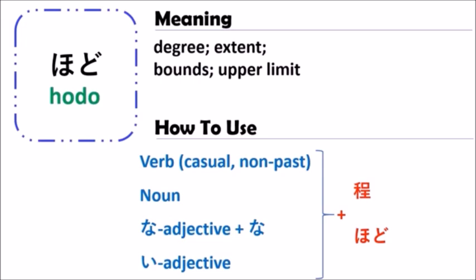For na-adjectives, end with na and follow it with hodo. For i-adjectives, just use the plain form, not changed, and end with hodo. Also, hodo can be written in kanji or in hiragana — don't confuse them, they have the same meaning: degree, extent, bound, upper limit.